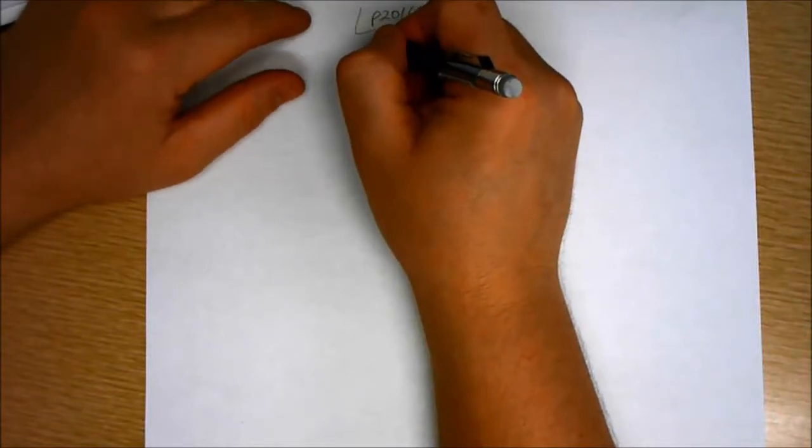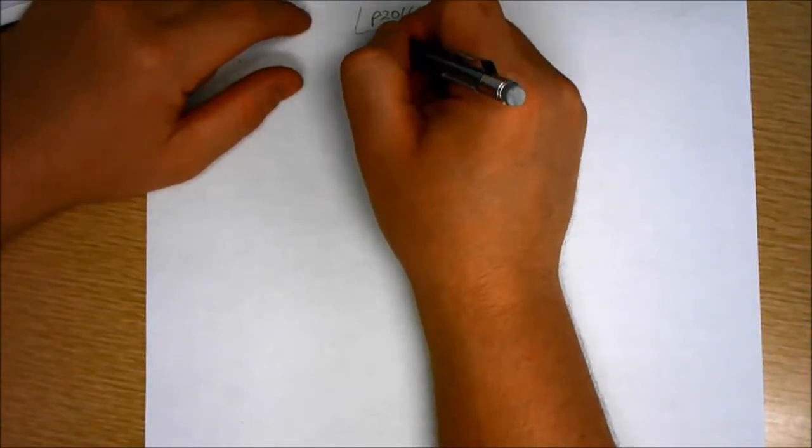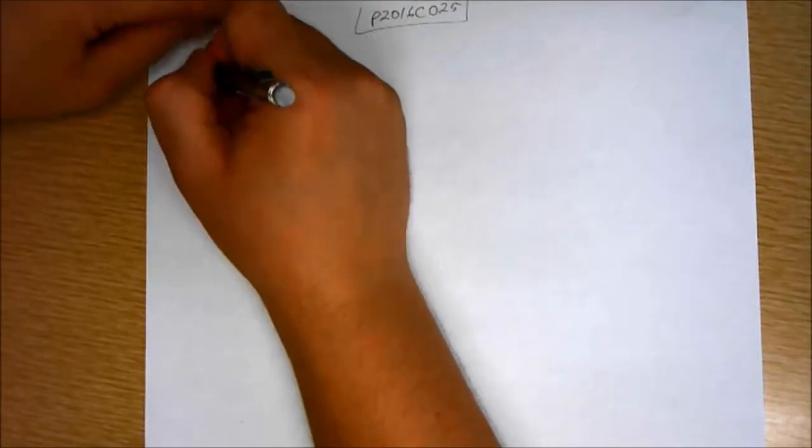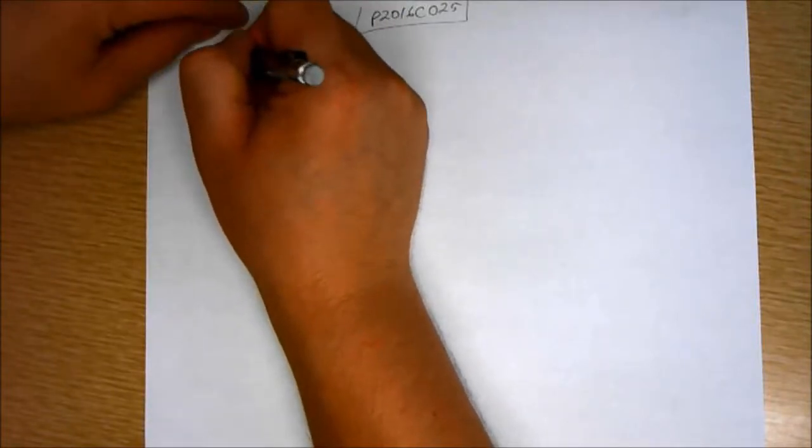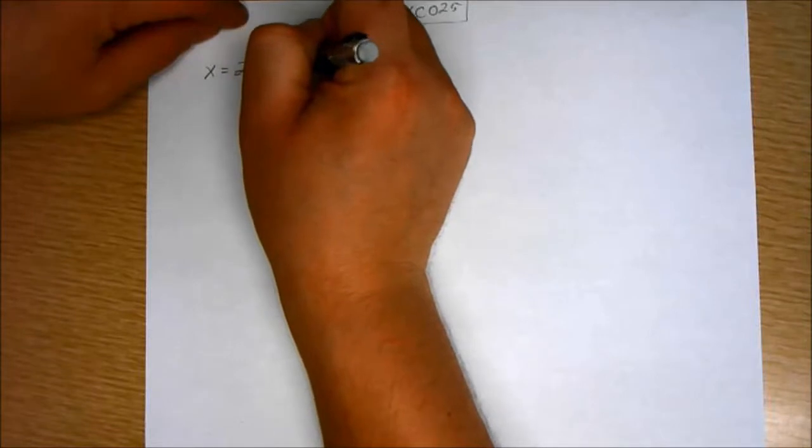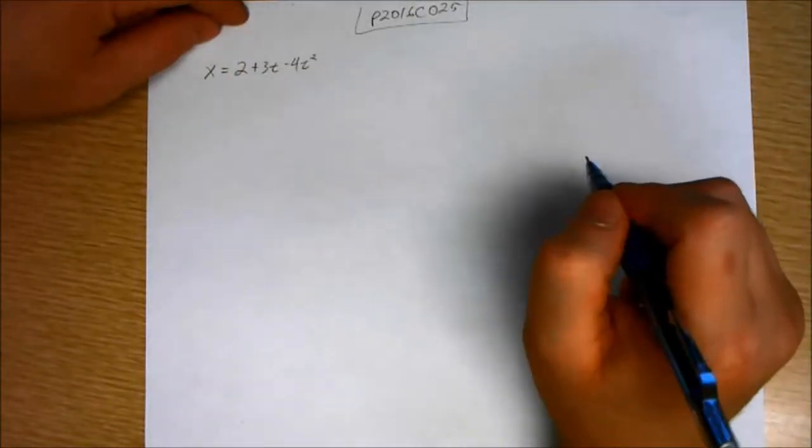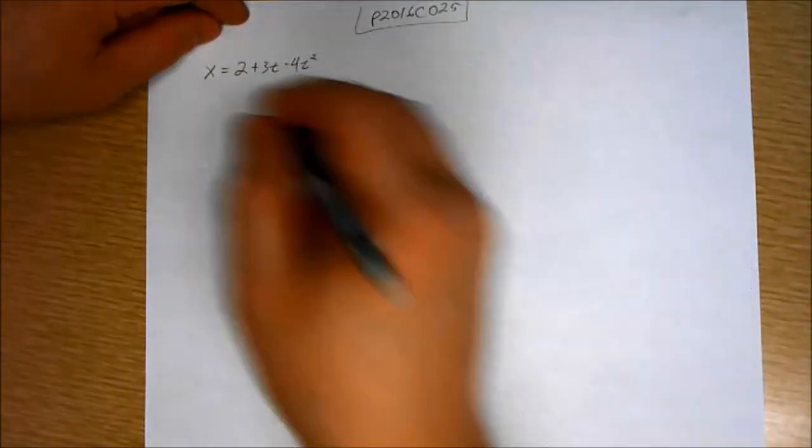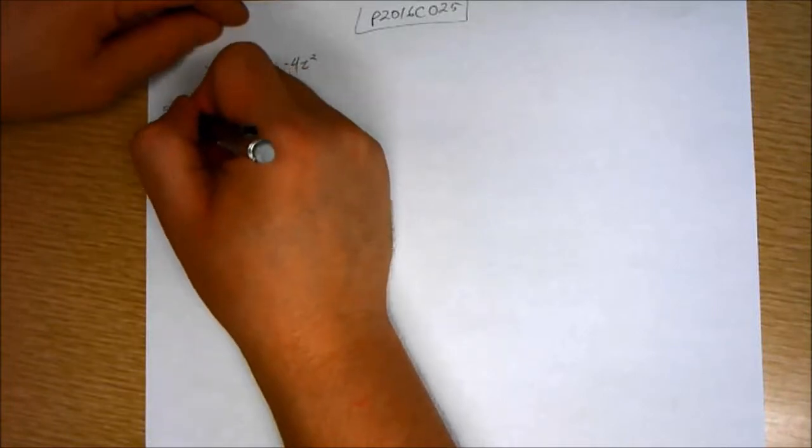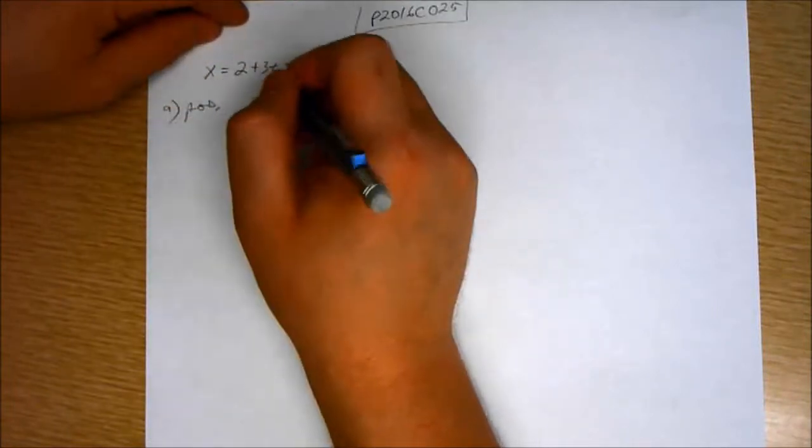Okay, so this problem is similar to the one previous in that we have a position function of a particle. The particle moves along the x-axis. Its position is given by the equation x equals 2 plus 3t minus 4t squared with x in meters and t in seconds. Determine its position when it changes directions.